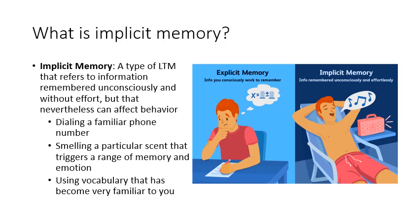Another example is using vocabulary: once you learn a lot about psychology, there will be some terms that become really familiar, like STM. After a while, you might automatically know that's short-term memory — you won't even think about it, it'll just be unconscious. This image breaks out explicit memory, things you're consciously working to remember including episodes in your life, versus implicit memory, like knowing all the words to a song without giving it any thought.